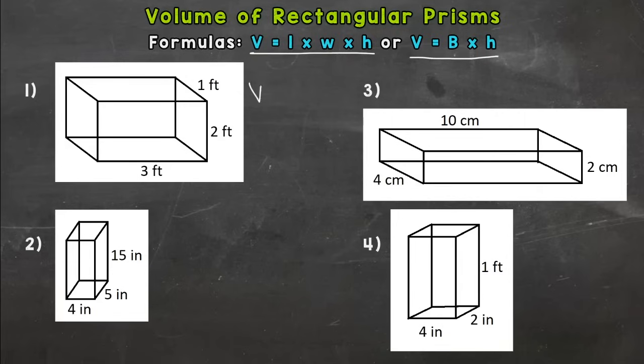Now the V stands for volume in our formula, and then this L right here stands for length times width times height, or another formula you may see is this capital B which stands for the area of the base times the height. Now these formulas are basically the same thing because length times width will give you the area of the base, which you just multiply by height. So either way you're going to get the same answer.